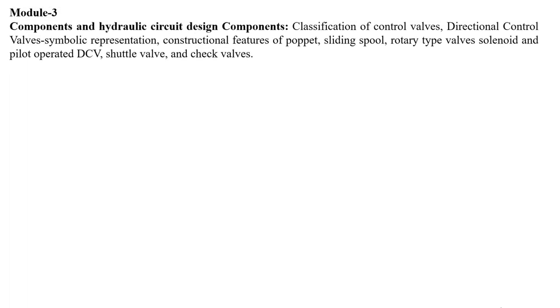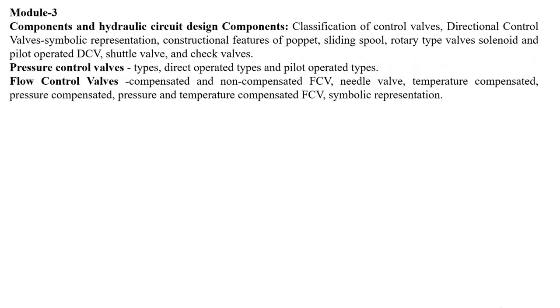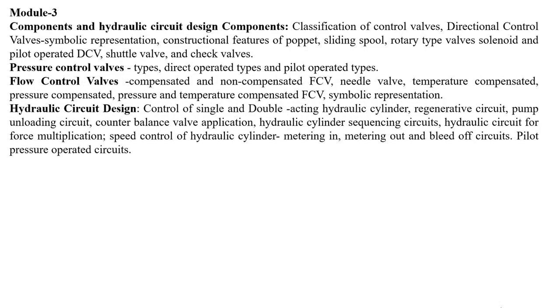In Module 3, you will study different components and hydraulic circuit design. This includes classification of control valves, different directional control valves with their symbolic representations and constructional features — including poppet, sliding, spool, and rotary type valves — solenoid and pilot operated directional control valves, shuttle valves, check valves, different types of pressure control valves, direct and pilot operated types, flow control valves including compensated, non-compensated, needle valves, temperature compensated, pressure compensated, and pressure-and-temperature compensated types, along with their symbolic representations and hydraulic circuit designs.